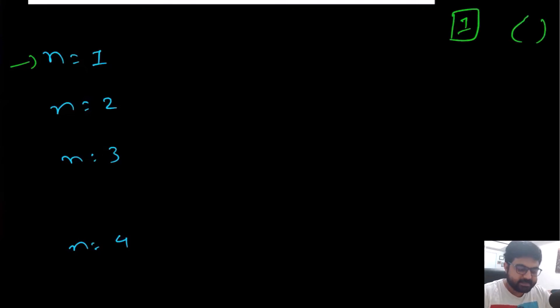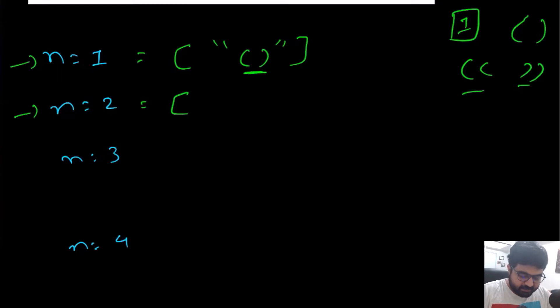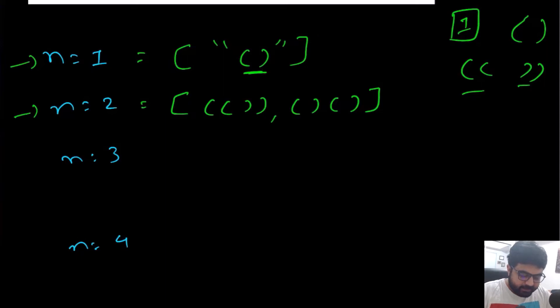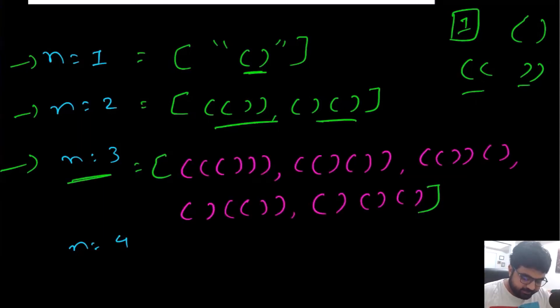In the first example, we are given n equal to 1, which means we need to make one possible pair and all the combinations of well-formed parentheses. Obviously, the answer is quite simple — we simply return just one possible pair. For n equal to 2, we have two opening and two closing brackets — four values total. The only two possibilities we can make are two arrangements, and these are what we need to return. Things become more interesting when we reach n equal to 3, where there are five possible pairs we can generate.